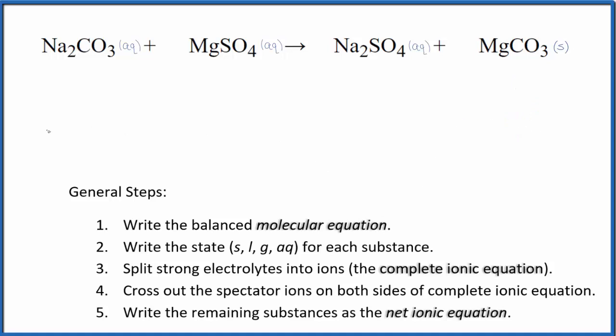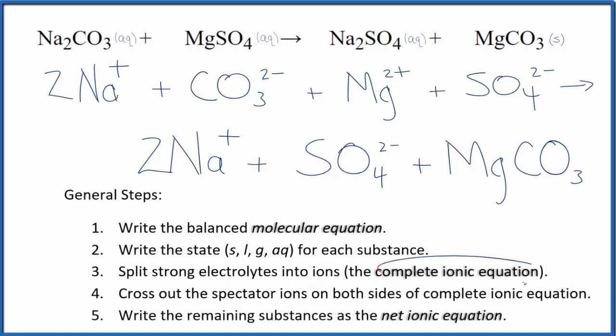Once we have the states, we can split the strong electrolytes into their ions. That'll look like this. So this is the complete ionic equation where we split everything into its ions except our precipitate, except the solid here. We keep that together. So this will be a solid. Everything else is going to be aqueous.